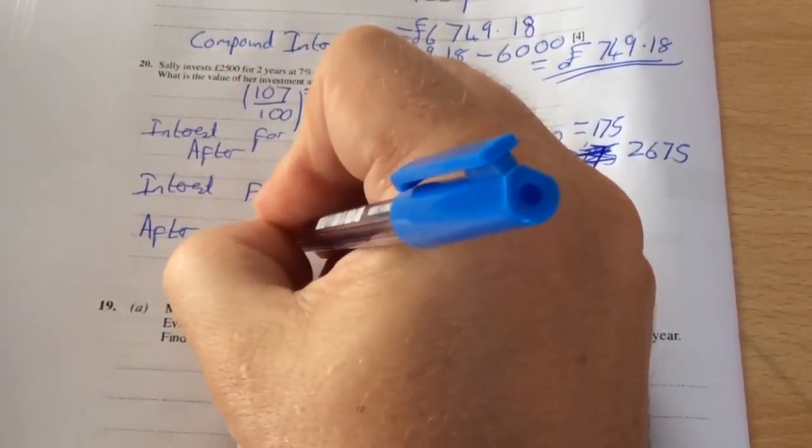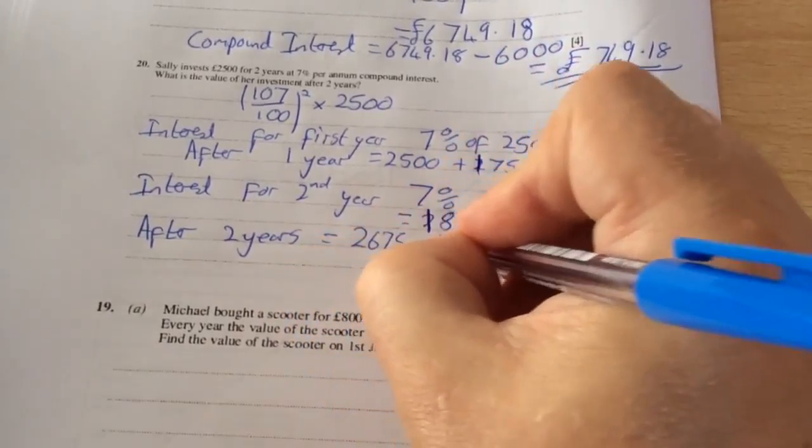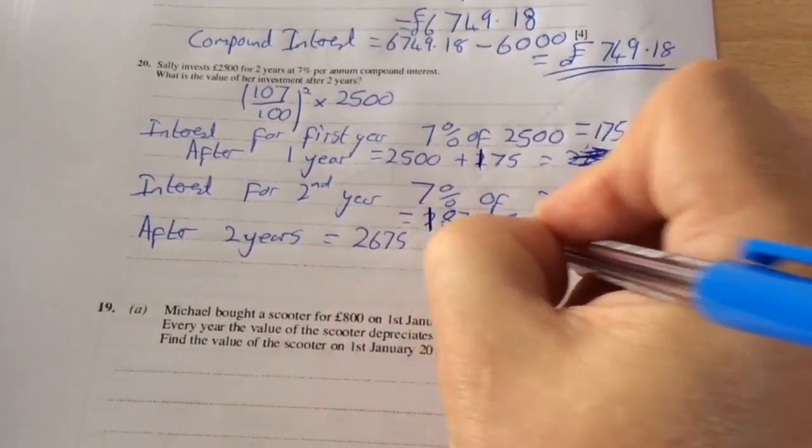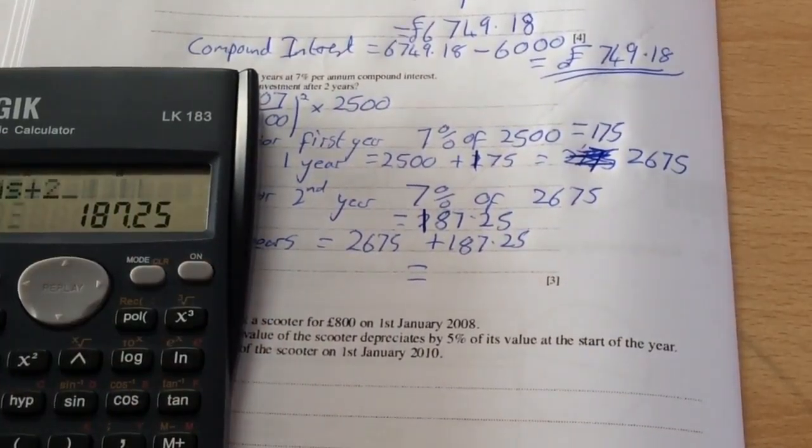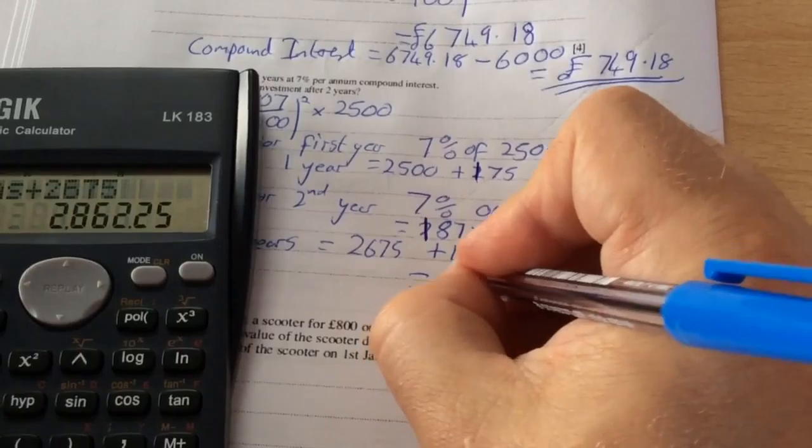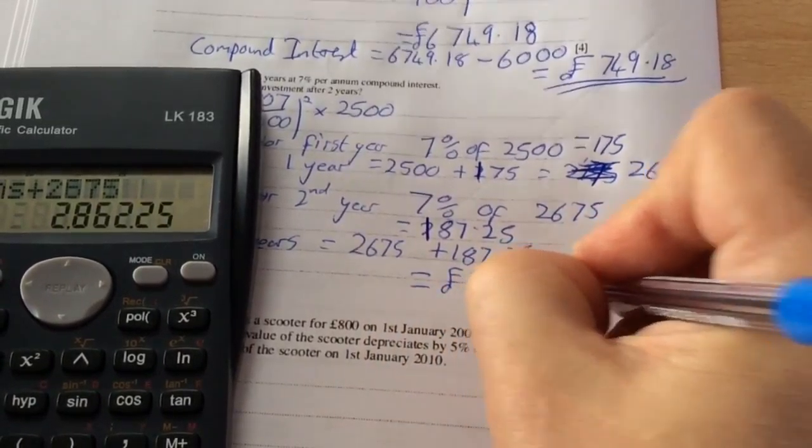Which means after two years, the investment is worth £2,675 plus £187.25, which equals £2,862.25.